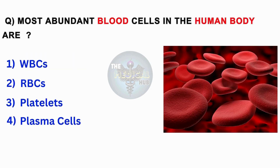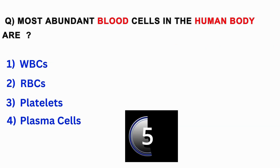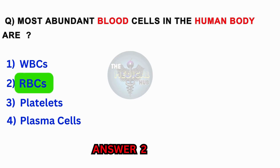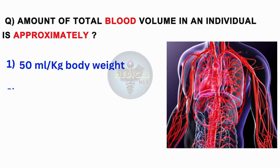Most abundant blood cells in the human body are? WBCs, RBCs, platelets, plasma cells. Answer 2: RBCs.